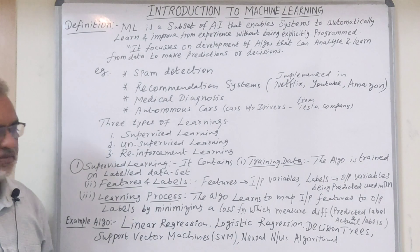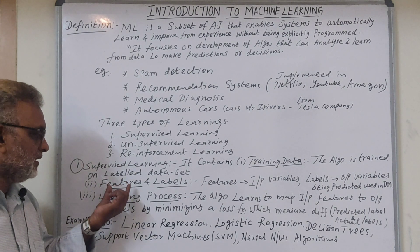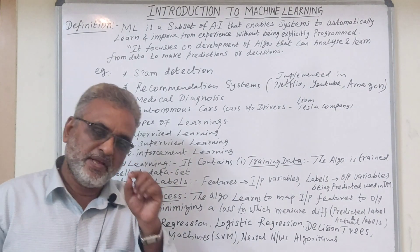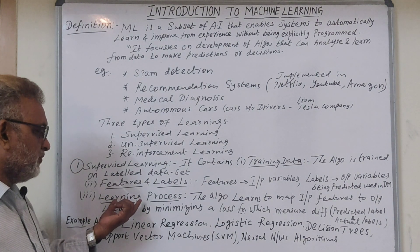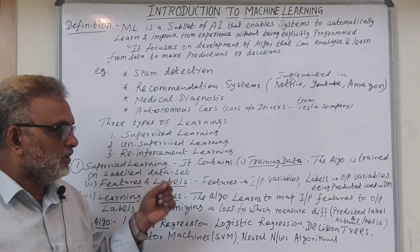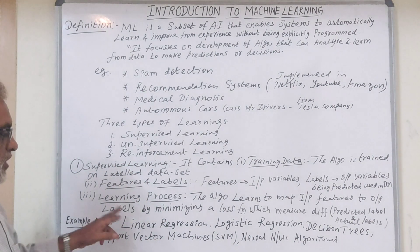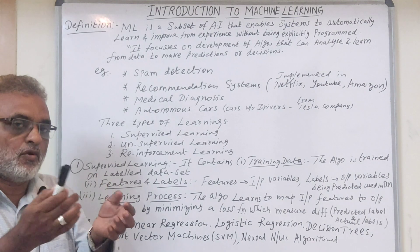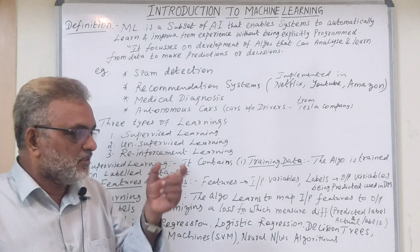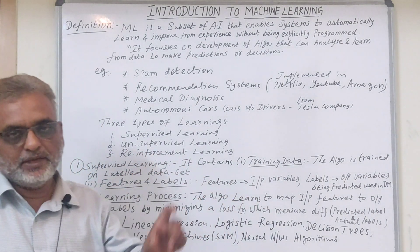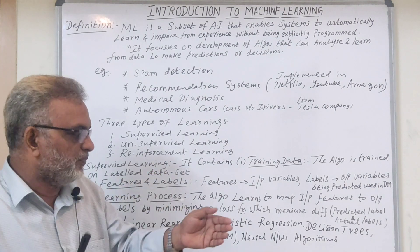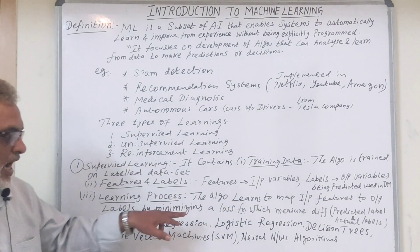The features and the labels: features refer to the input variables, and labels are the output variables being predicted, used in decision making. The third important concept in supervised learning is the learning process — the algorithm learns to map input features to output labels by minimizing a function called the loss function. The loss function measures the difference between the predicted label and the actual label, and we have to minimize this loss function.